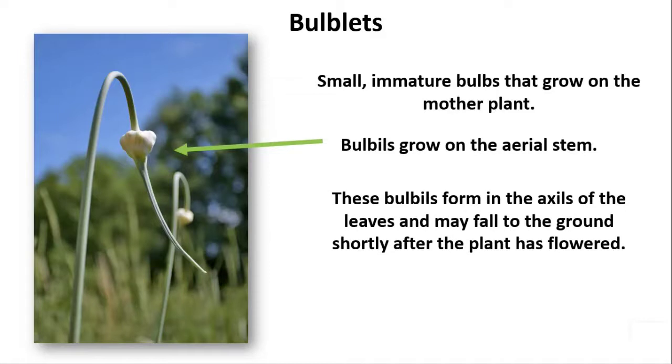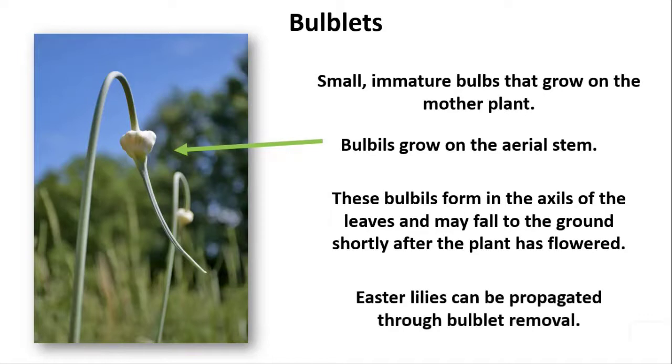These bulbels form in the axils of the leaves and may fall to the ground shortly after the plant has flowered. Easter lilies can be propagated through bulblet removal.